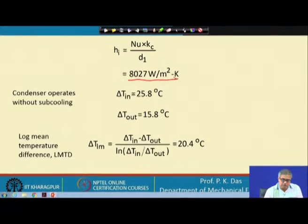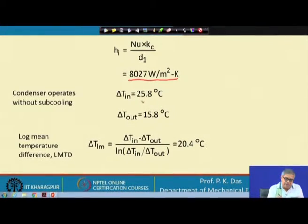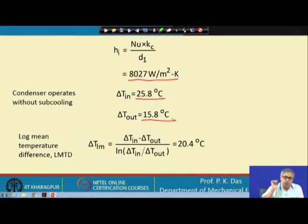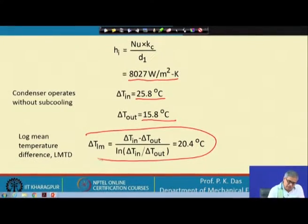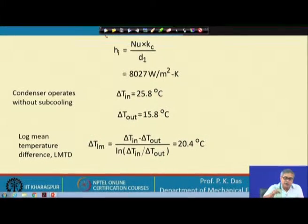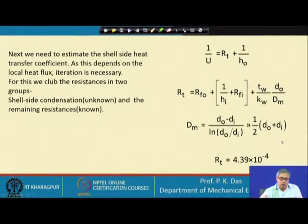Now we know the condensing steam temperature. At the inlet and outlet sides of the heat exchanger we know the temperature differences for the coolant, so from there we can calculate the log mean temperature difference. This also we can calculate and move to the next slide.